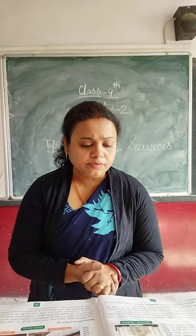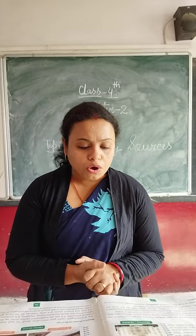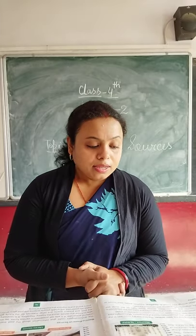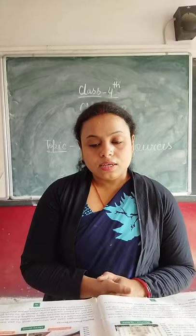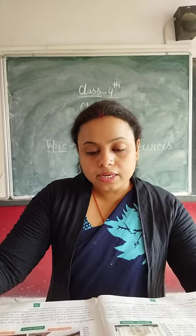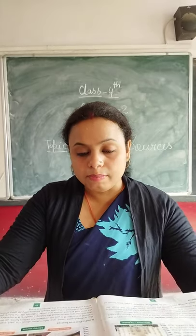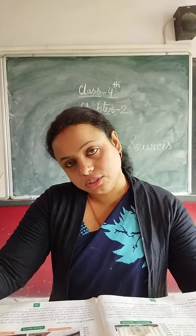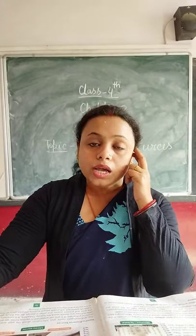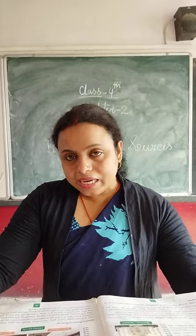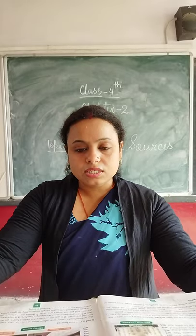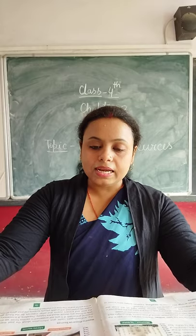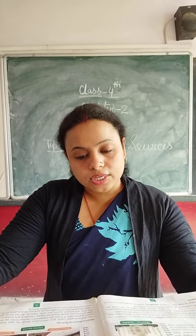Mesopotamian writing was known as Cuneiform. Egyptian script was known as Hieroglyphics. In India, Prakrit, Pali, Sanskrit, and Tamil were the main languages used in ancient literature. The language of ancient literature was based on the region where it was written.